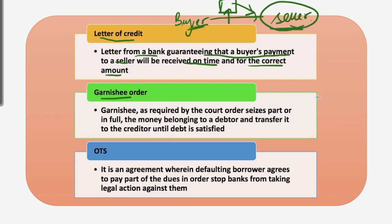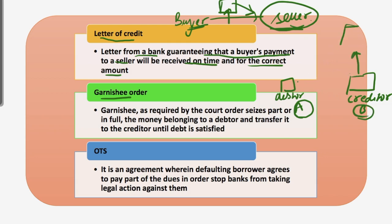Then we have the garnishee order. If there is a debtor and a creditor — Mr. A is the debtor, unable to pay back the loan he has taken from B who is the creditor — the creditor may go to a court, and that court can order the MNC or the office where A is working to seize the salary or wages of A and give it to creditor B until the debt is satisfied. So here, the office or MNC is the garnishee.